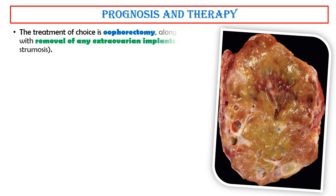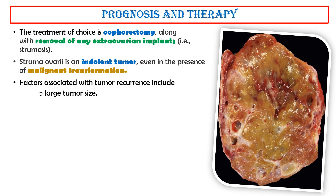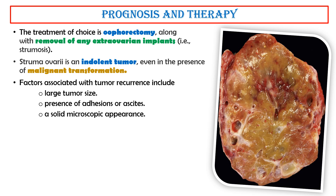Prognosis and therapy. The treatment of choice is oophorectomy along with removal of any extra-ovarian implants. Struma ovaryi is an indolent tumor even in the presence of malignant transformation, which is seen in about 10% of cases. Factors associated with tumor recurrence include large tumor size, presence of adhesions or ascites, and a solid microscopic appearance. Long-term follow-up is necessary.